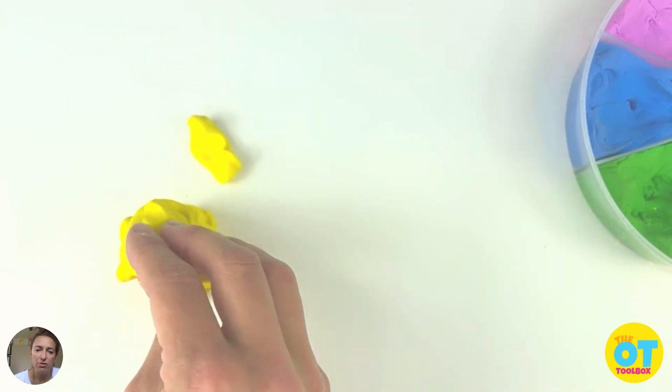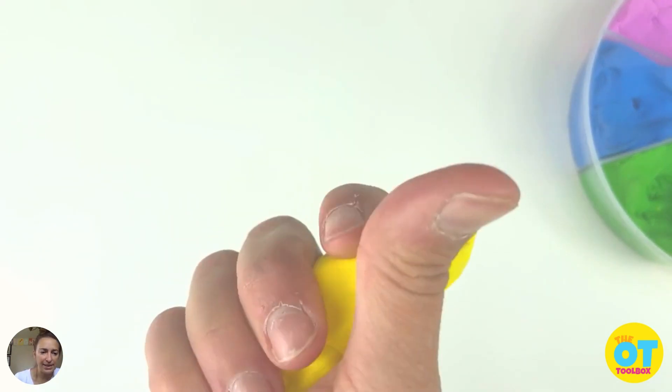Okay. You can gather those all up with the Play-Doh ball. Squeeze it again as another transition.